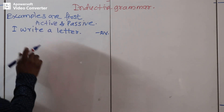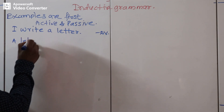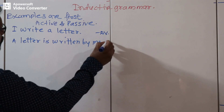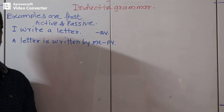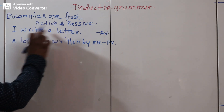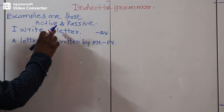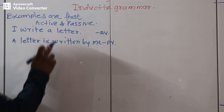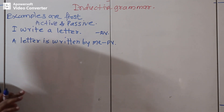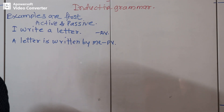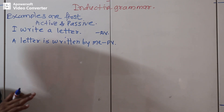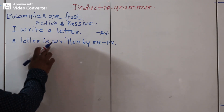The teacher writes many examples of active voice as well as their passive equivalents. So the passive form of 'I write a letter' is 'A letter is written by me.' Both active and passive sentences are written together, and students have to observe each example very carefully to find out what kind of structure or pattern is used when active changes into passive voice.